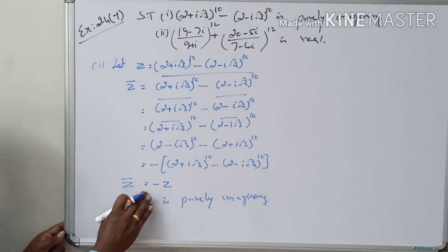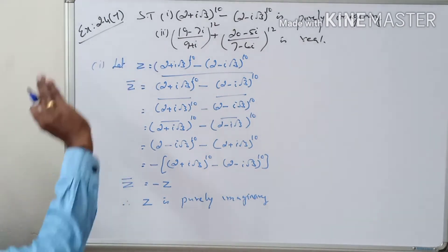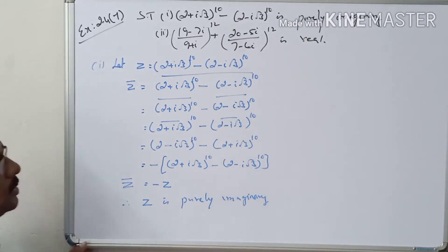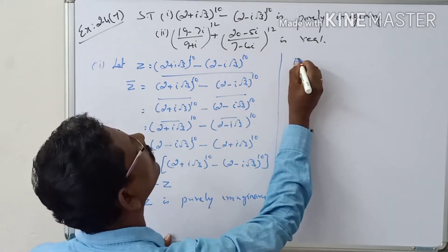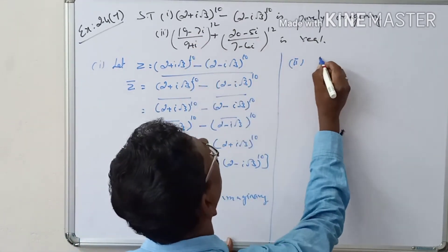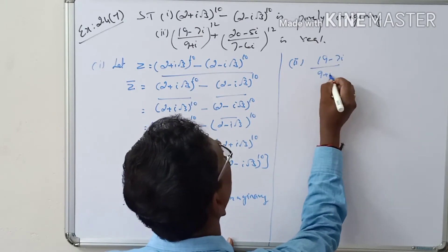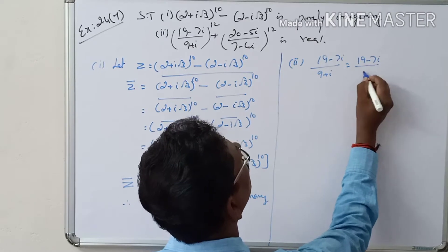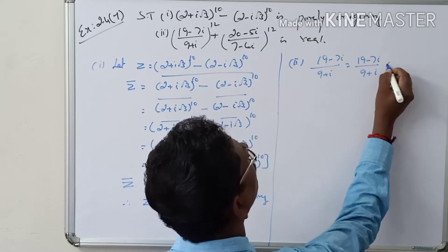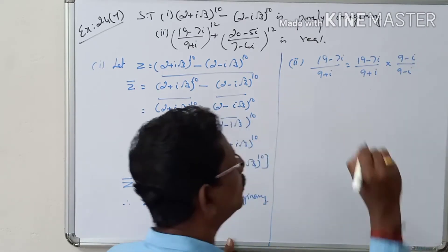When z̄ equals minus z, z is purely imaginary. Now for the second part: we have (19 - 7i) / (9 + i), multiplied and divided by the conjugate of the denominator, giving (19 - 7i)/(9 + i) multiplied by (9 - i)/(9 - i).